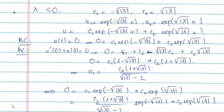You replace x=0 into u and into u'. After replacing x=0 into u and u', you get c1 + c2 — this is u(0) — minus square root of lambda times c1 plus square root of lambda times c2 — this is u'(0). So you have an equation in c1 and c2 that you can try to solve.